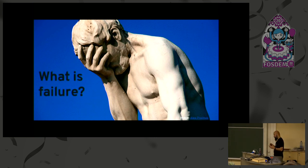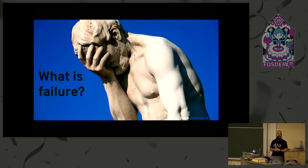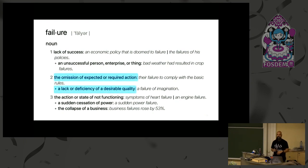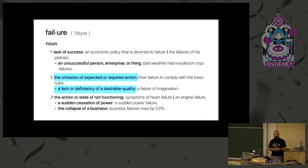This is obviously a scientific conference, so how would you even write an example if you haven't yet decided what failure is? The dictionary definition from the Oxford Dictionary gives us two or three definitions. I don't like the first one — it's circular: 'failure is lack of success.' I like the second and third better: 'the omission of an expected result or required action,' and 'lack or deficiency of a desirable quality.' Those seem plausible — we can work with them.